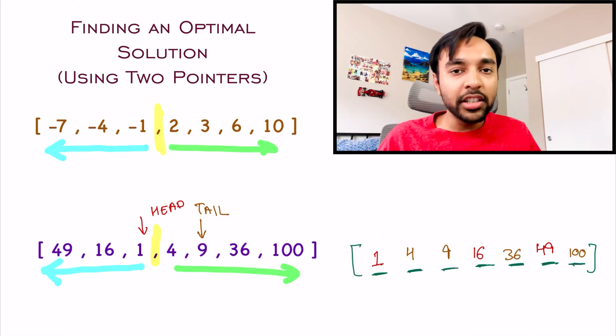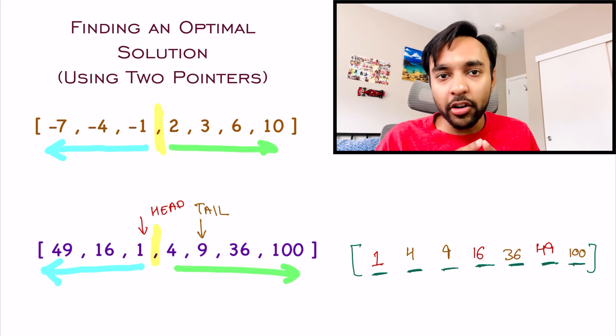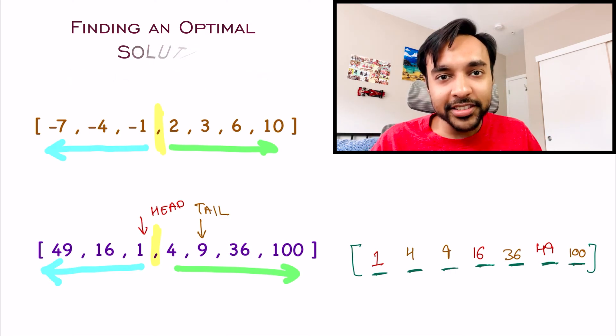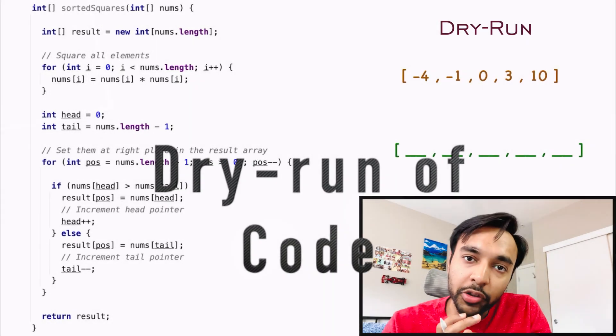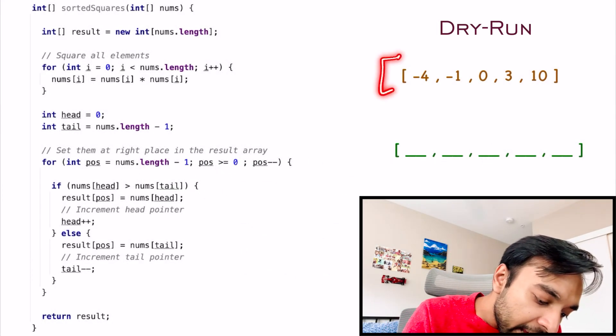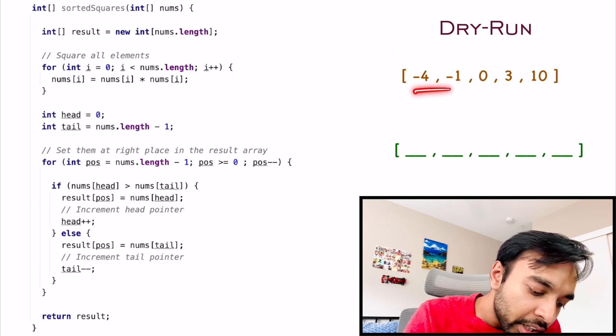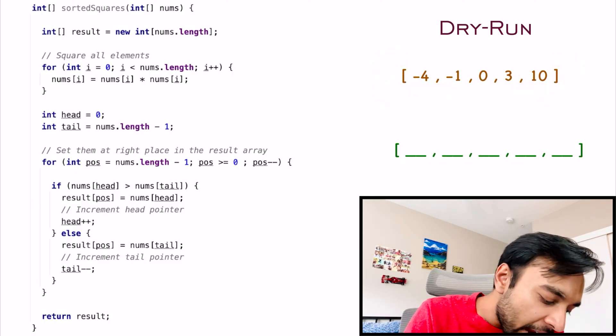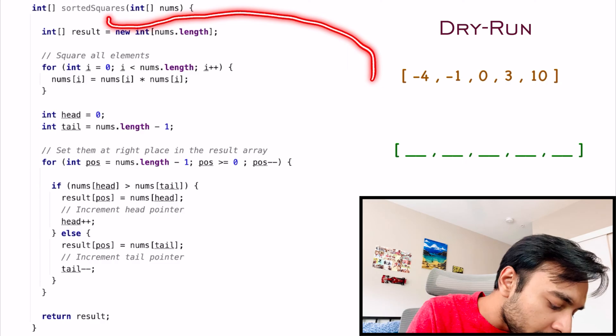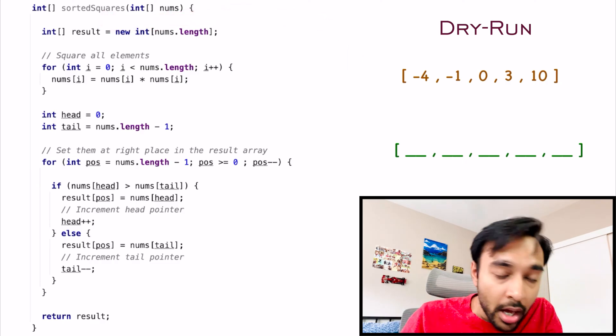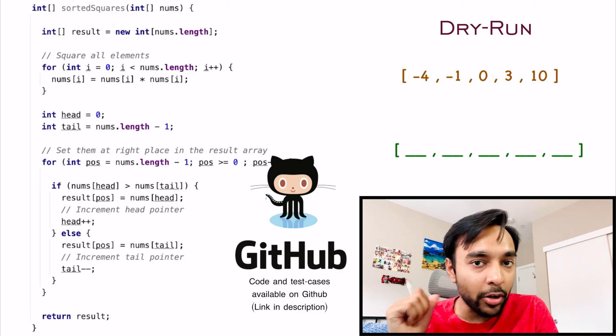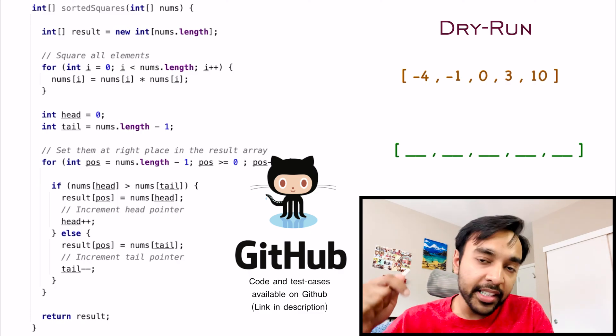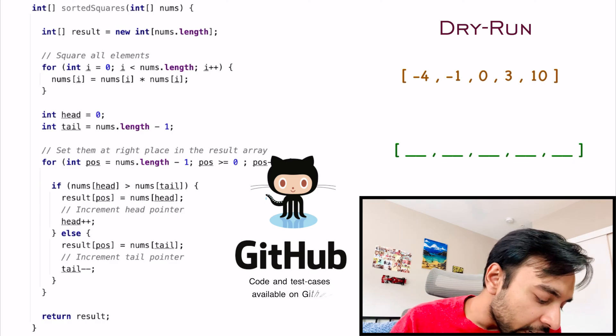Now, if you have understood this approach, let us do a dry run of the code and see how this actually works. On the left side of your screen, you have the actual code to implement this solution. And, on the right, I have an integer array that has both negative and positive integers. And, it is passed in as an input parameter to the function, sortedSquares. Oh, and by the way, this complete code and its test cases are also available on my GitHub profile. You can find the link in the description below. Moving ahead with our dry run.